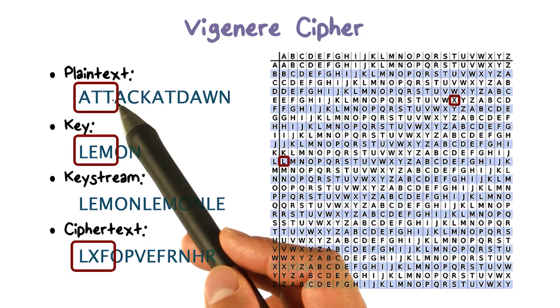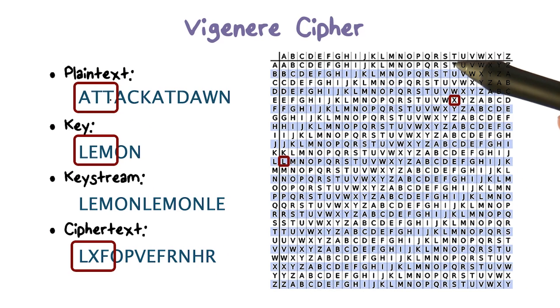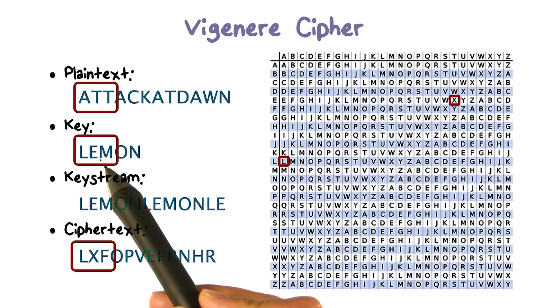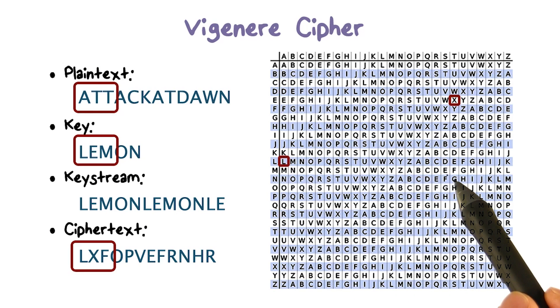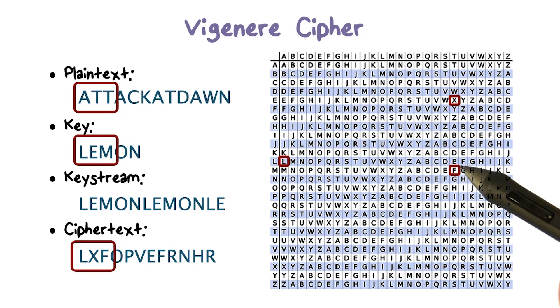The next plaintext letter is T again, so we look at column T again. But here, the letter in the key is M, so we look at column M. And the mapping of column T, row M, is F. This means that the ciphertext of plaintext T is F.